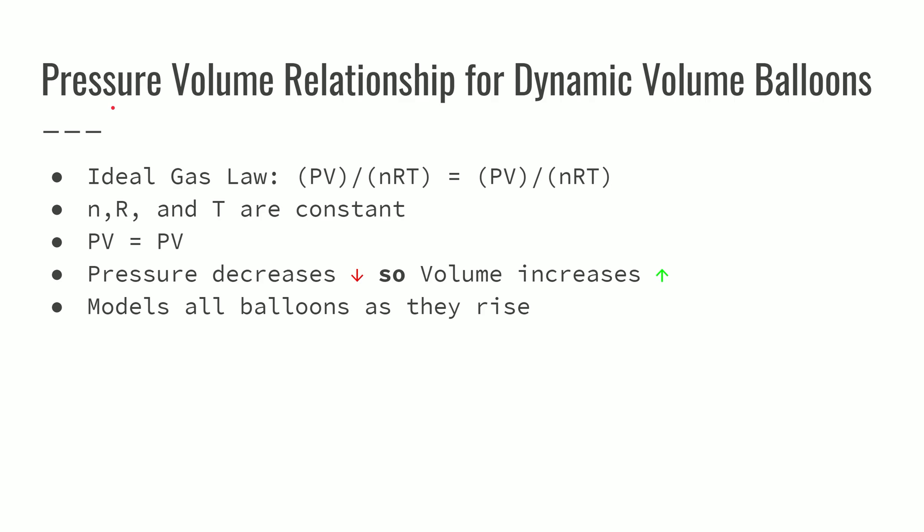So next I want to talk about the pressure volume relationship. So here's the ideal gas law in condition one right here, and then condition two here. And then I'm assuming that the balloon is not leaking. So the amount of gas is remaining the same. That's the gas constant is always going to stay the same. And I'm just going to assume the temperature is the same just to make it easy. So we can see that the pressure and volume equals pressure and volume. So as you go up in altitude, the pressure is going to decrease. So the volume needs to increase in order to make this equal. So this basically models all balloons as they rise. Basically balloons are just going to take up more volume if they have the opportunity to because the pressure is decreasing.